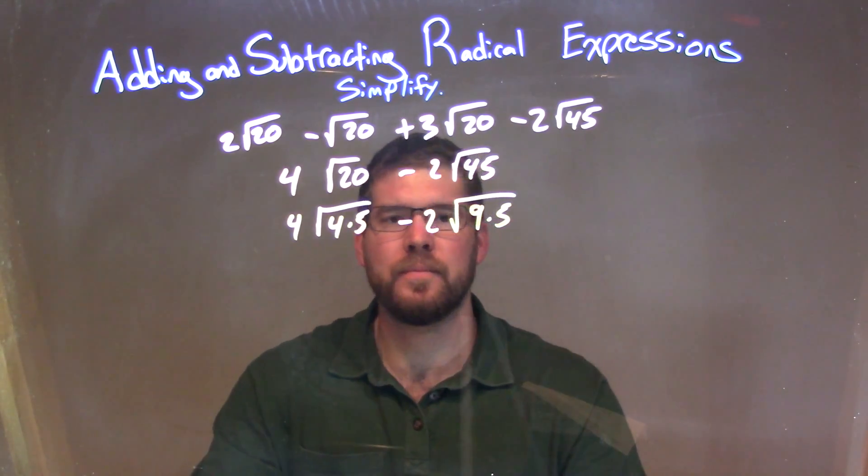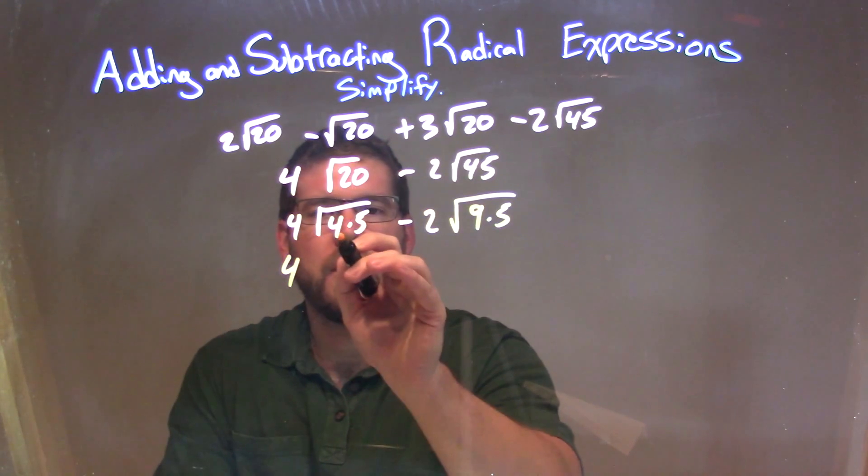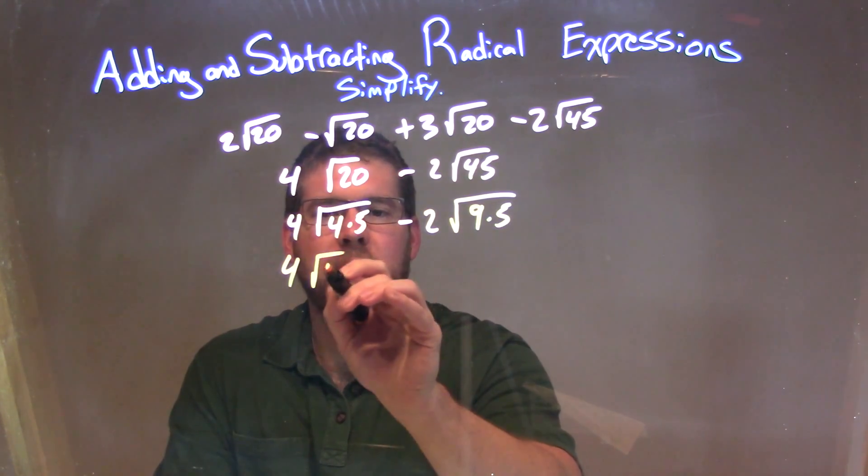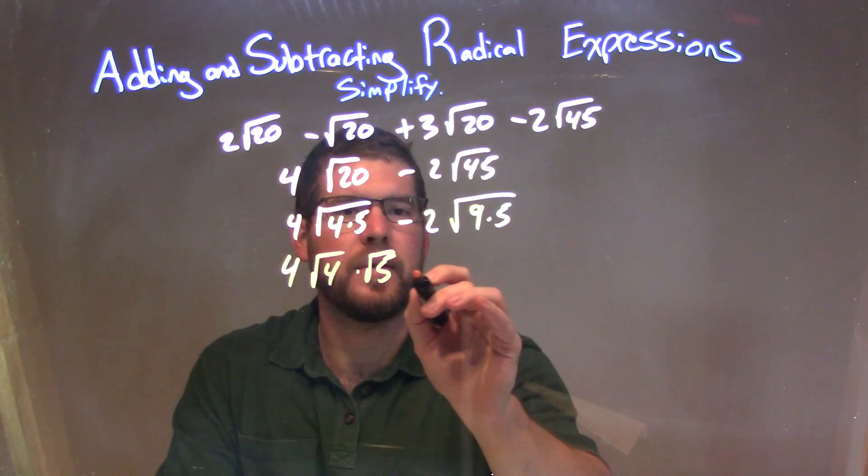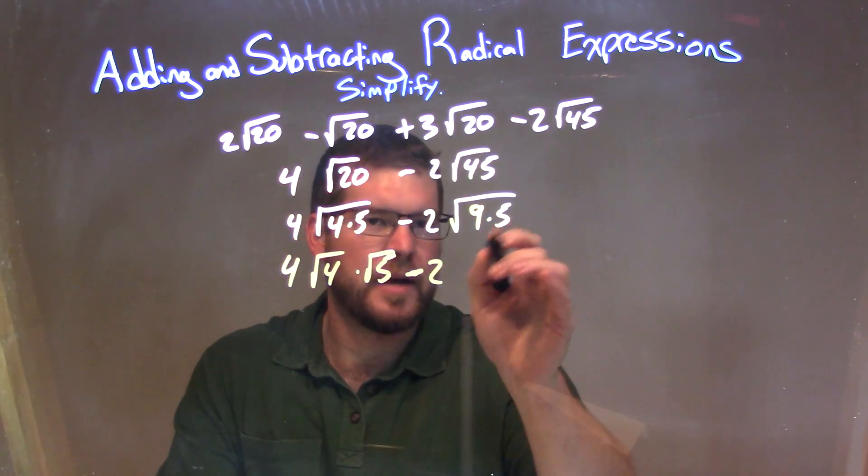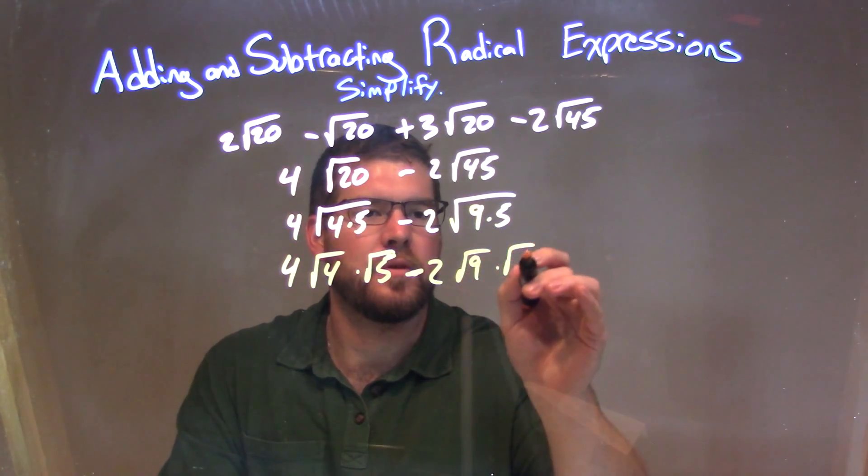So now, let's simplify this a little more. The 4 times 5 I can break down to be the square root of 4 times the square root of 5. And the same thing with the 9 times 5—the square root of 9 times the square root of 5.